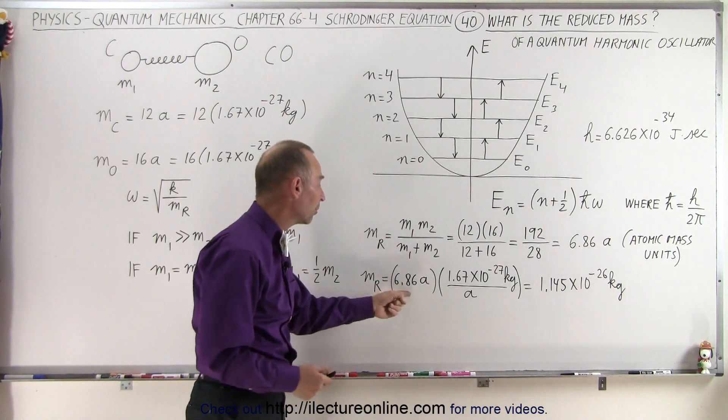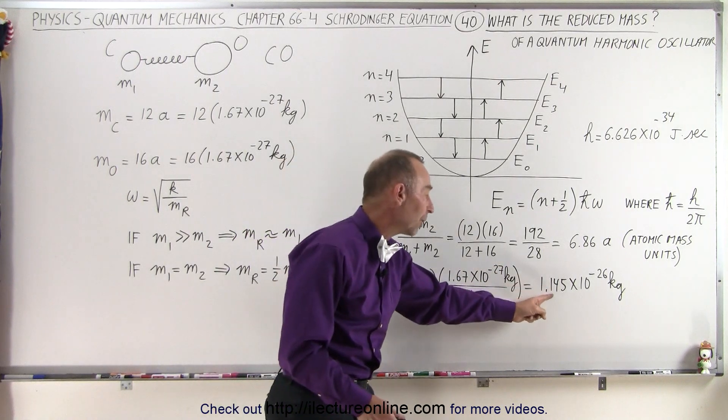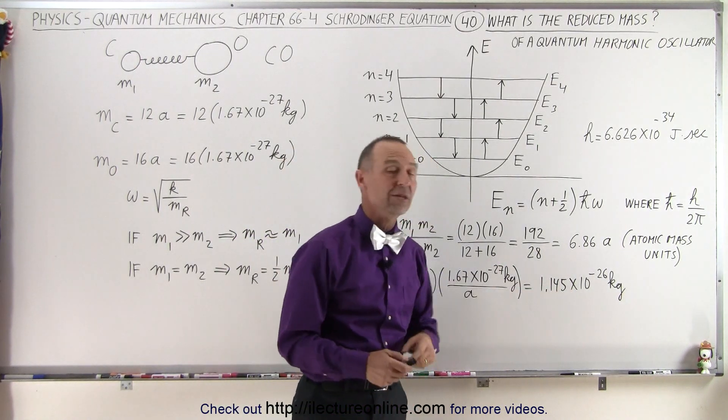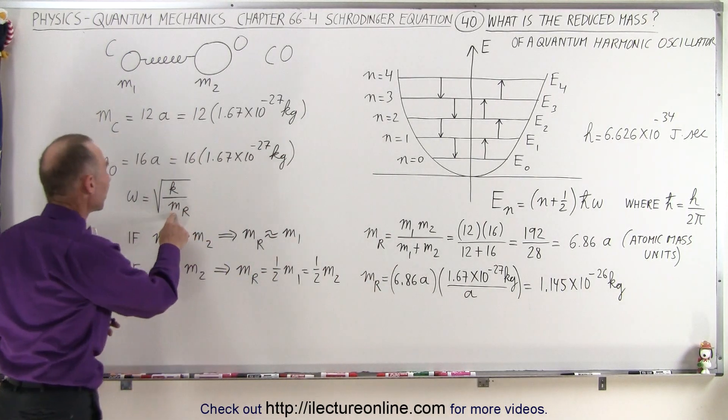And therefore, when we multiply that times the ratio of the number of kilograms per atomic mass units, we get about 1.145 times 10 to the minus 26 kilograms, which is the reduced mass of this molecule.